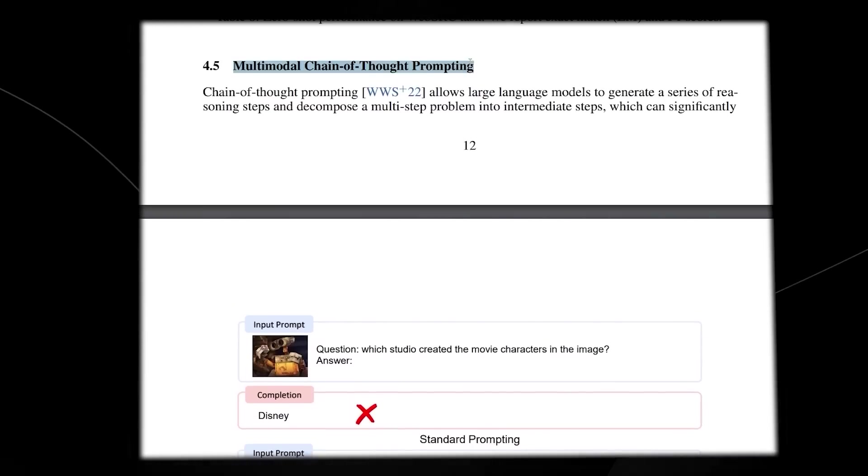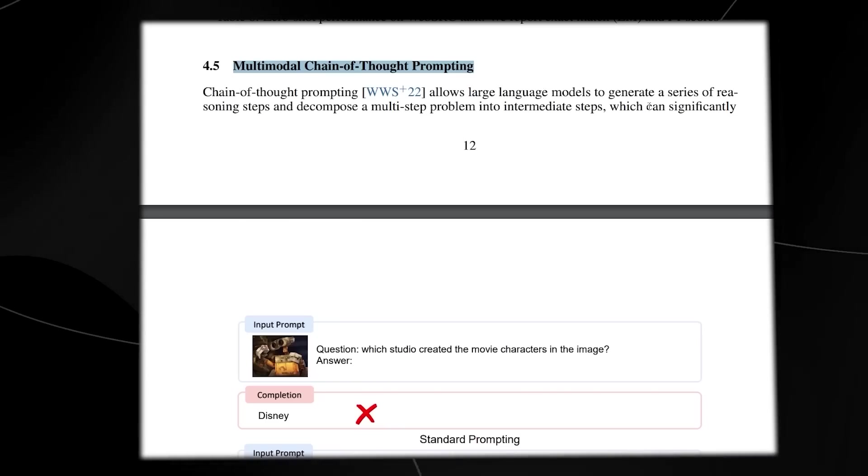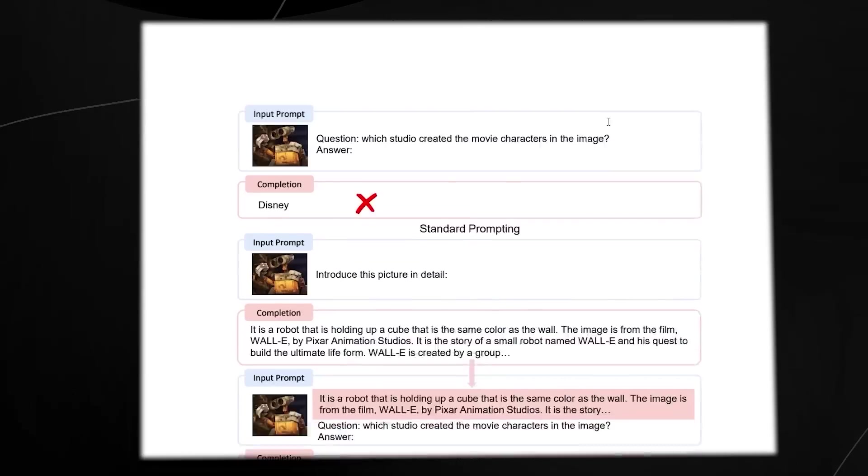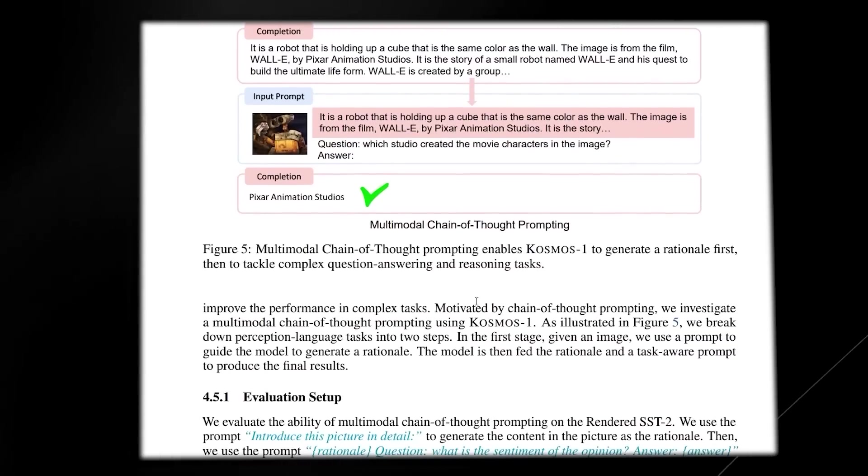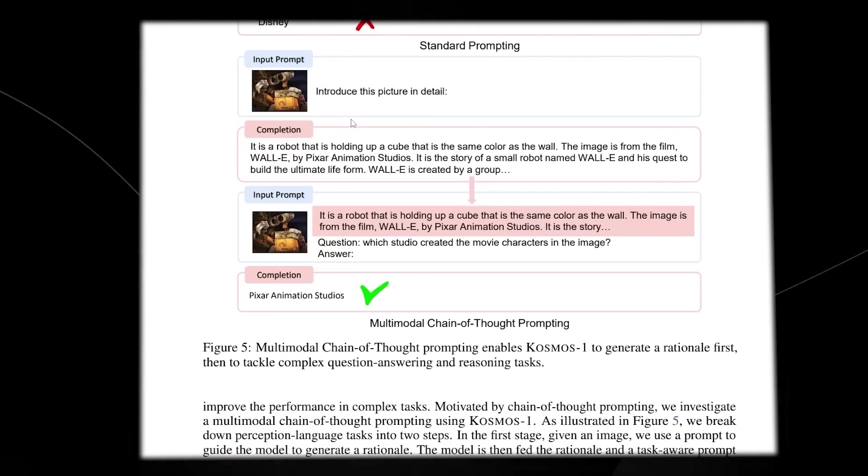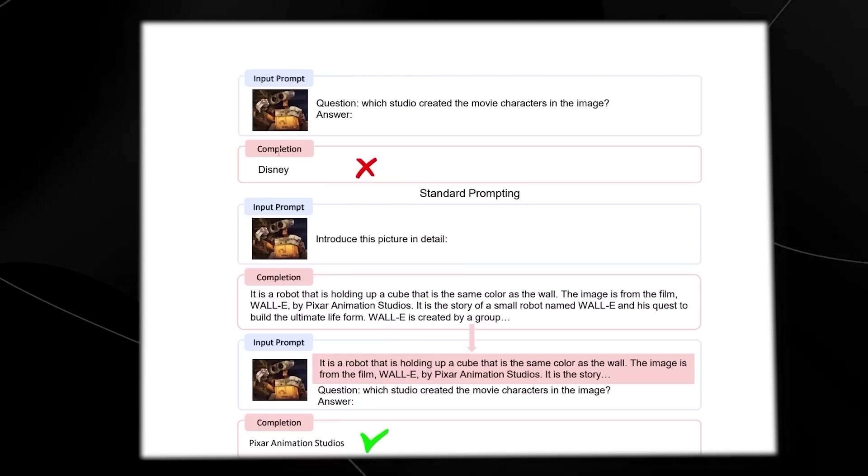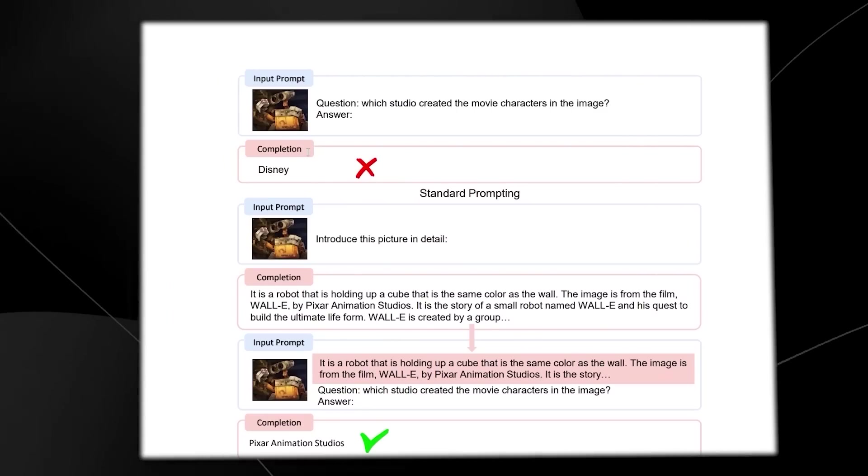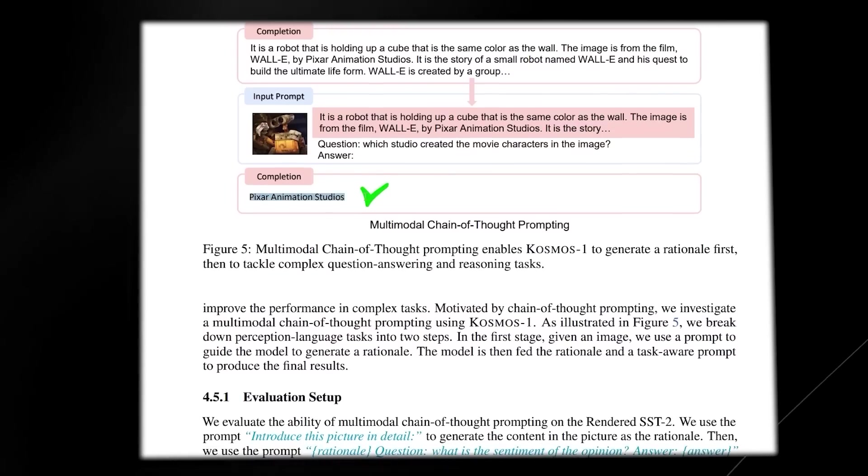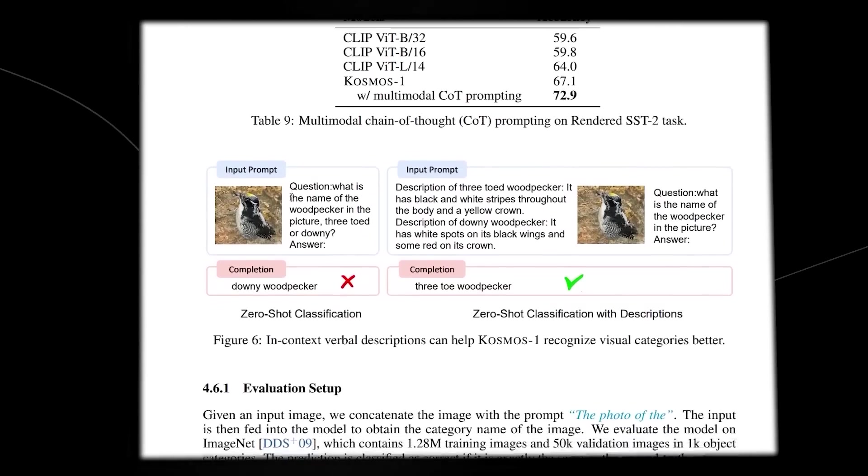And what we also have here is the multimodal chain of thought prompting. It says chain of thought prompting allows large language models to generate a series of reasoning steps to decompose a multi-step problem into intermediate steps, which can significantly improve the performance in complex tasks. So it's definitely very effective at understanding exactly what images are. And even if it doesn't get the question right first, it's definitely going to be able to understand what data is being presented to it and then eventually get the answer correct.